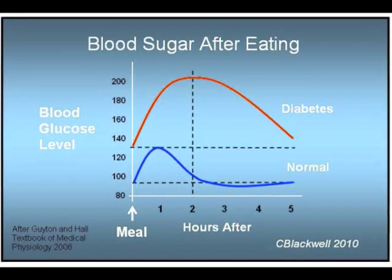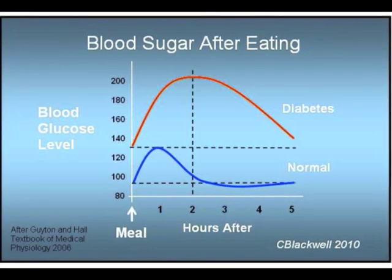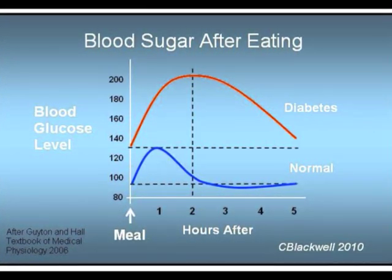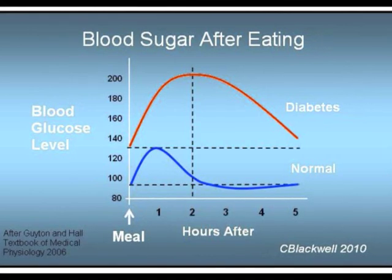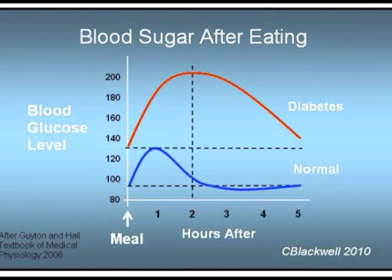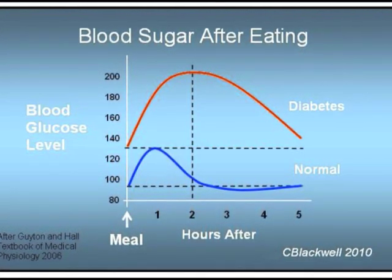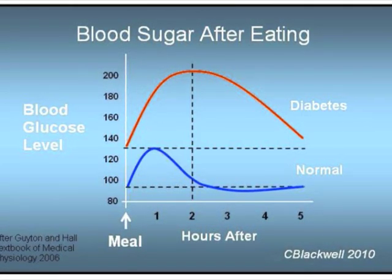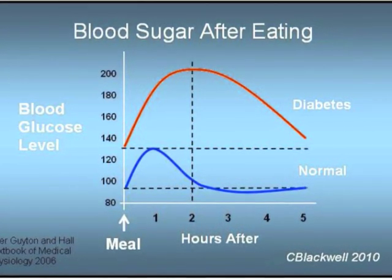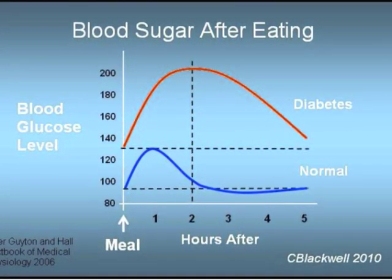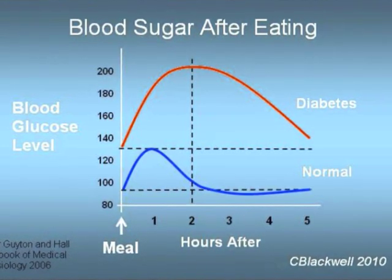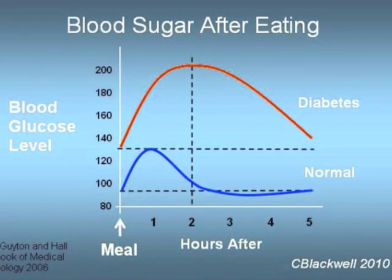Now look at blood sugar in a person with diabetes — the orange line. It shows no overlap with normal behavior. The fasting sugar starts higher, say 125 or over. After a meal, blood sugar rises to a much higher level and stays there, still near its maximum, at two hours. So in diabetes, there's too much glucose in the bloodstream and not enough in the cells.